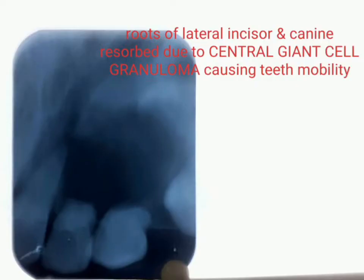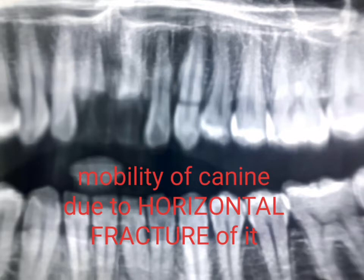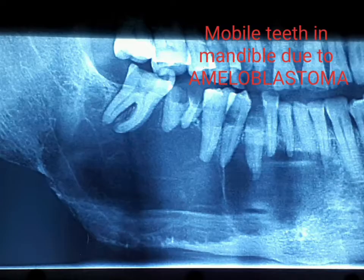These are some examples of local disorders that lead to tooth mobility other than periodontitis. The first: this lateral incisor and canine in the maxilla were mobile due to central giant cell granuloma, leading to extreme root resorption. The second: this canine in the maxilla was mobile as it had a horizontal fracture due to trauma. The third: premolars and molars in this mandibular quadrant were mobile due to ameloblastoma.